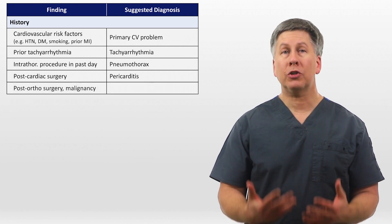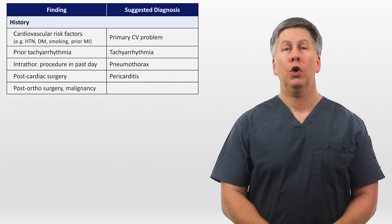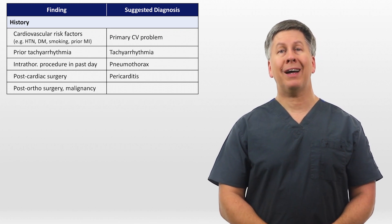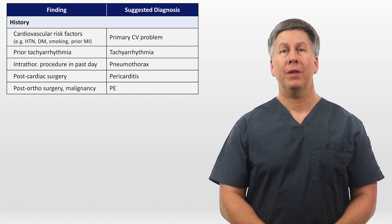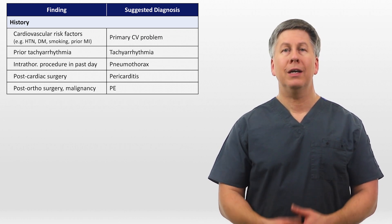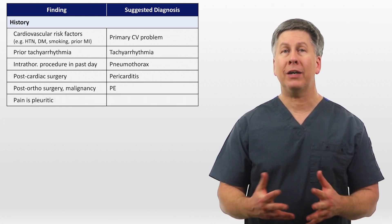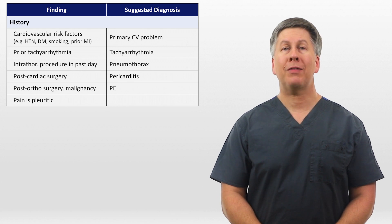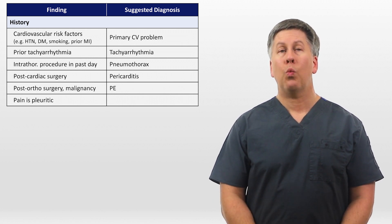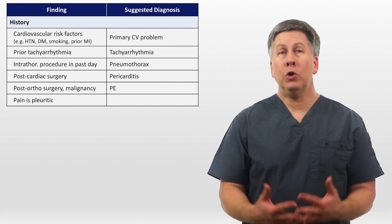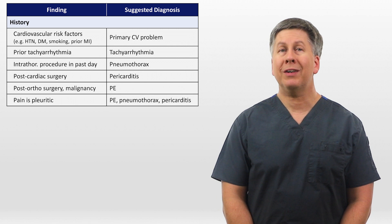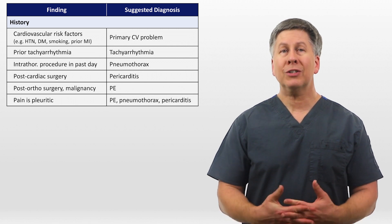Is she post-orthopedic surgery, particularly hip or knee, or does she have a history of malignancy — both of which place her at higher risk of a PE? The one key question to ask right there is whether the pain is pleuritic in nature, meaning is it worse with deep breathing or coughing? While pleuritic pain makes most internists immediately think of PE, pneumothorax and pericarditis also present the same way.